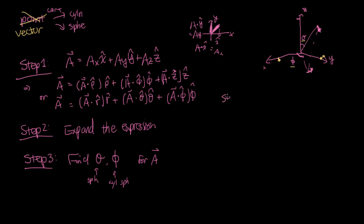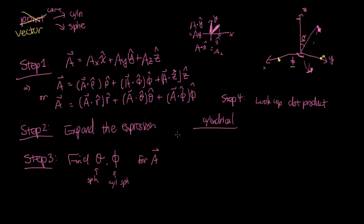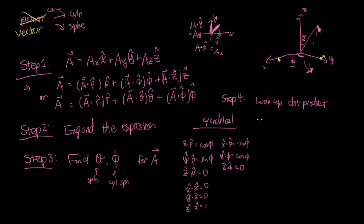Step four: the easiest thing to do is to look up the dot products based on your values. I'm just going to write out a bunch of equations and we'll talk through one example to show you where the logic comes from. Through the magic of video editing, I'm just going to instantaneously make the cylindrical formula appear. And there you have it — through the magic of the pause button, you have a table for all of the possible dot product combinations.